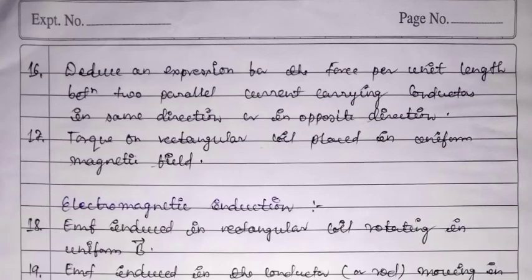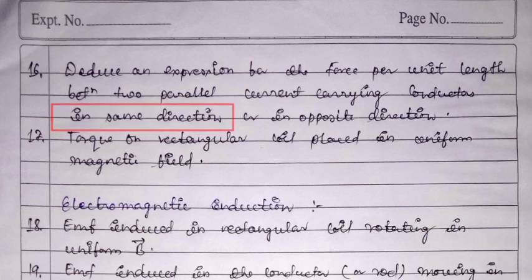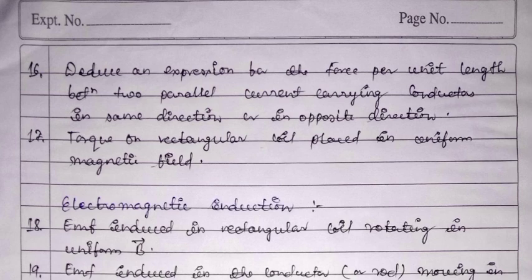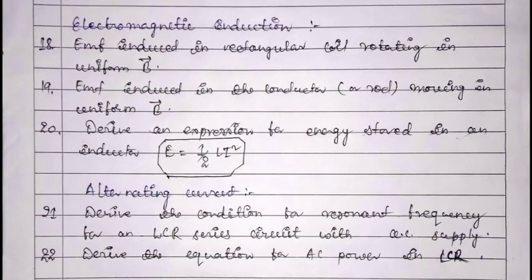Also important: derive an expression for the force per unit length between two parallel current-carrying conductors — both the case when currents flow in the same direction and when they flow in opposite directions. Additionally, derive the expression for torque on a rectangular coil placed in a uniform magnetic field.